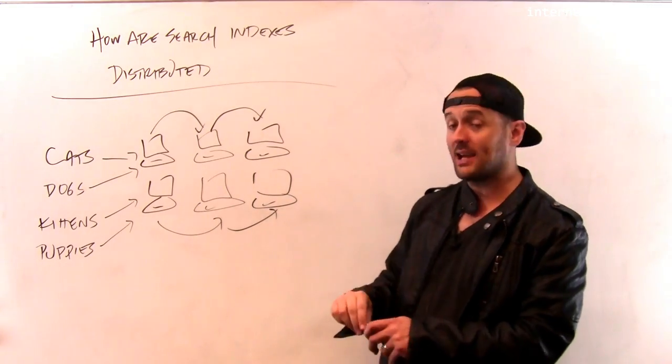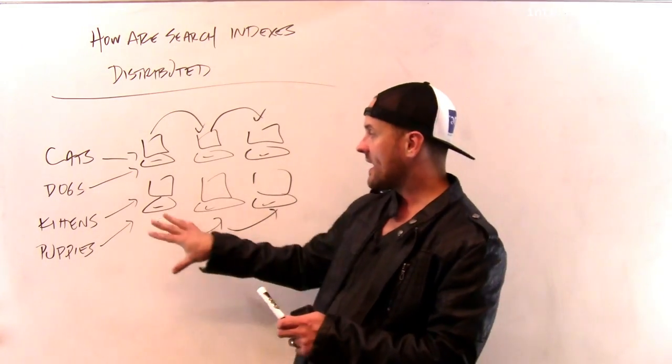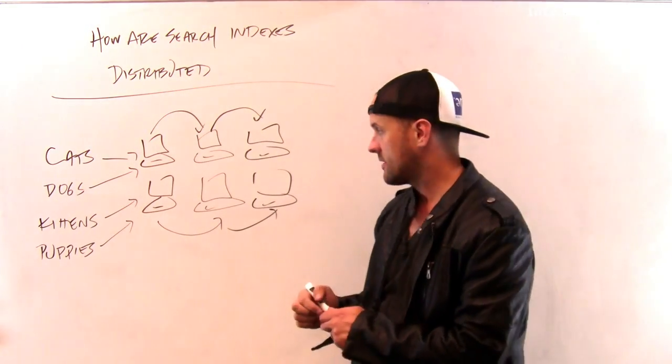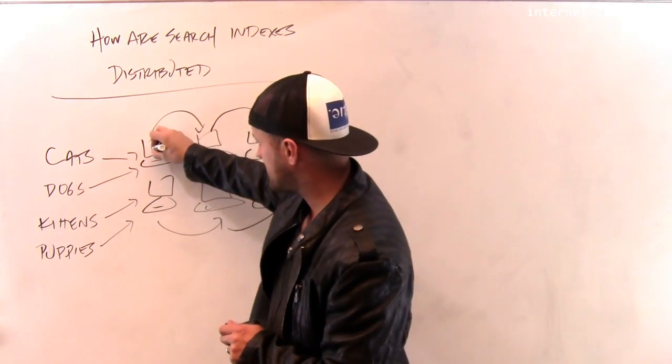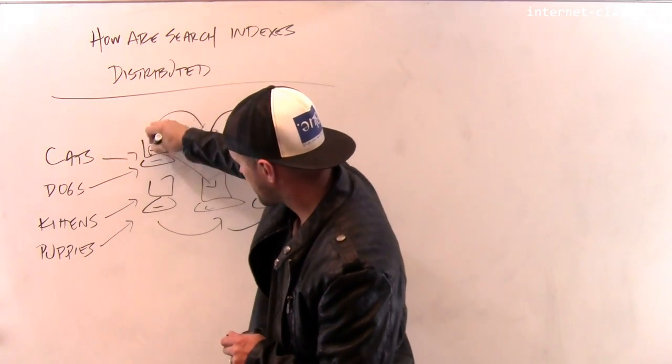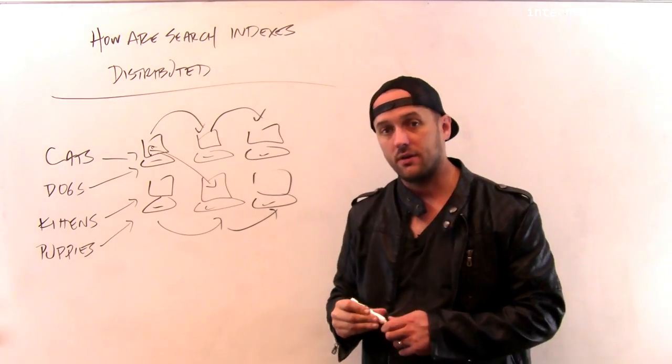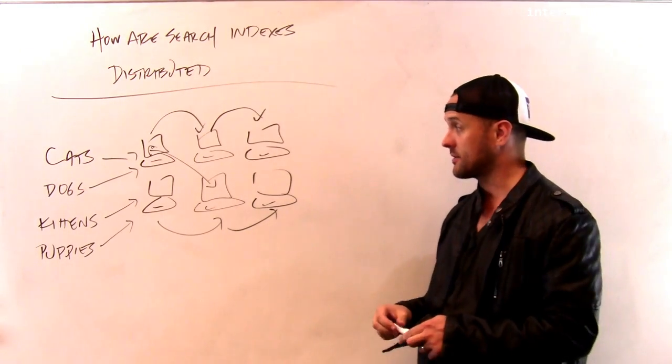Now, if I search for cats and kittens or things like this, I might need to access multiple machines in order to do this. So a query that looks for cats and puppies might have to touch this machine and then also include results from this machine before those results are actually merged together and sent back to the user.